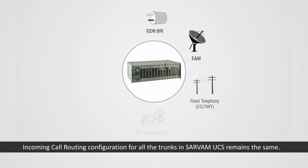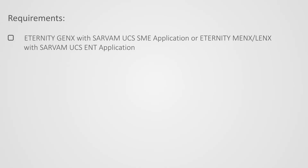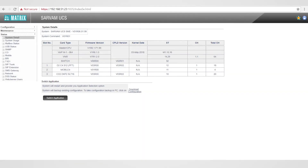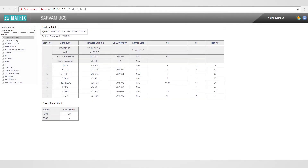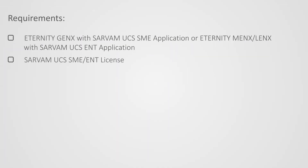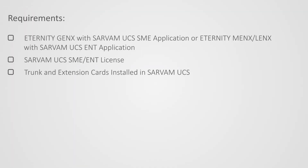Incoming call routing configuration for all the trunks in Servum UCS remains the same. Requirements: Eternity GE Annex with Servum UCS SME application, or Eternity ME Annex or LE Annex with Servum UCS ENT application. Servum UCS SME or ENT license. Trunk and extension cards installed in Servum UCS.